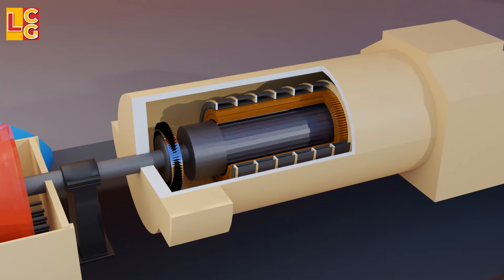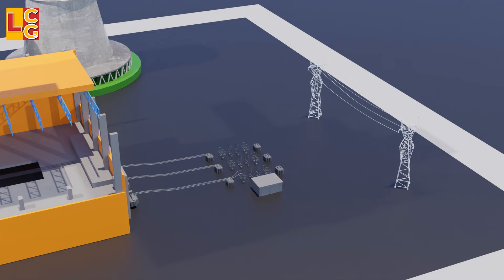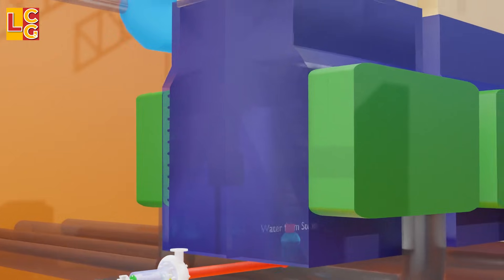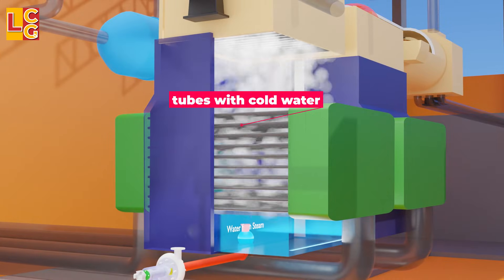The electricity then goes to the substation and the transmission lines. Then, the steam from the steam turbines flows to the condenser.